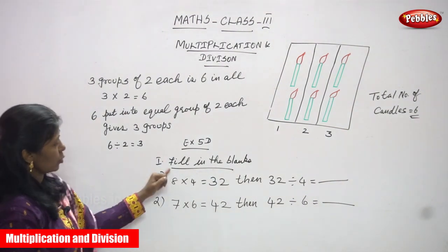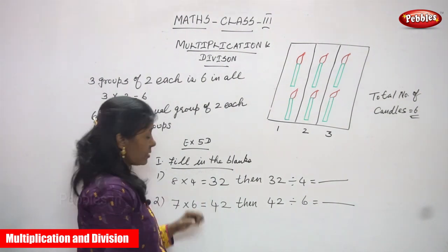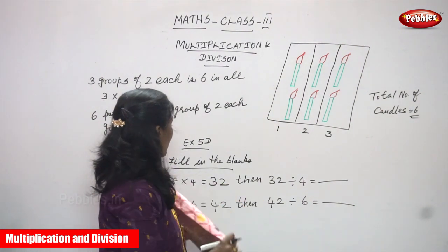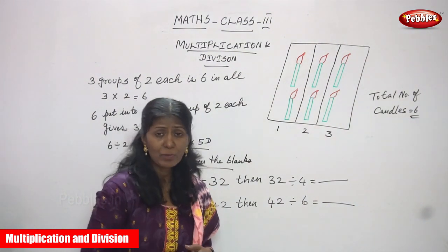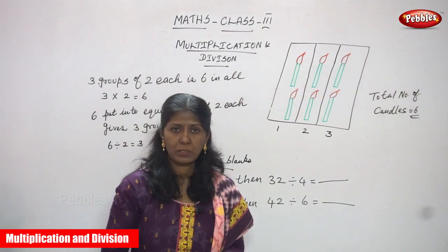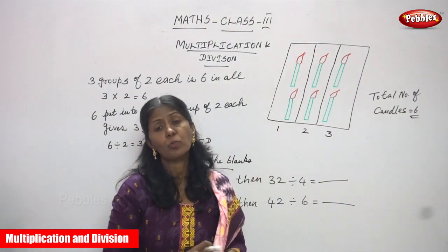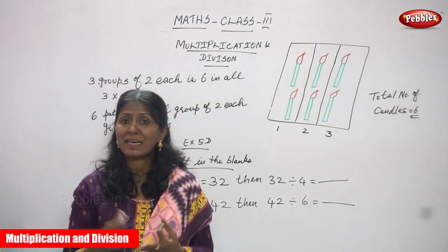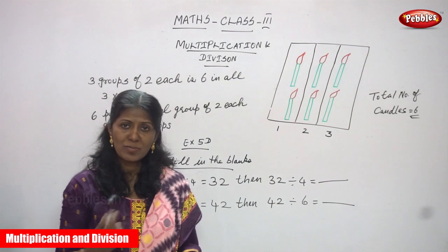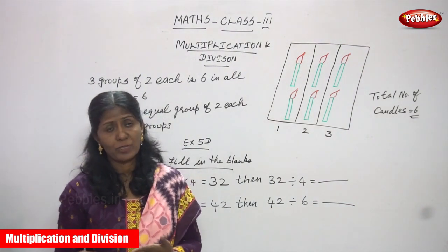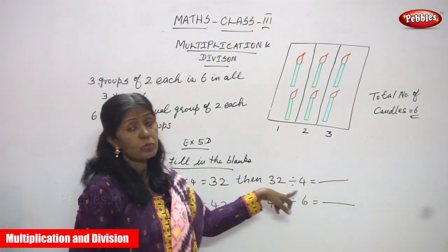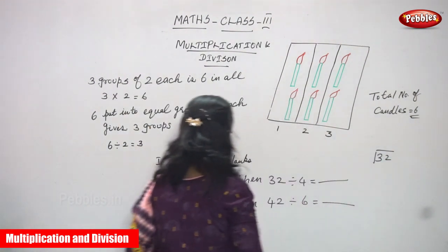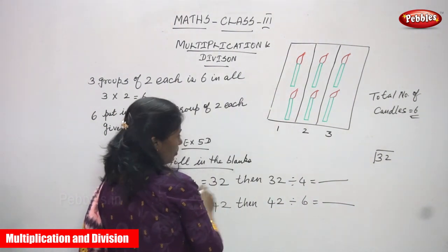That is division. Now fill in the blanks. Eight into four is thirty-two, as given. You can use the eight-times table or the fourth table, whichever is convenient. Eight ones are eight, eight twos are sixteen, eight threes are twenty-four, eight fours are thirty-two. Or using the fourth table: four ones are four, four twos are eight, and so on. Eight into four gives thirty-two. Then thirty-two divided by four — since eight into four is thirty-two, thirty-two divided by four gives eight.